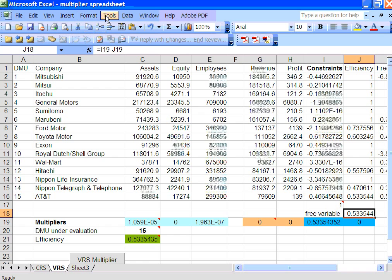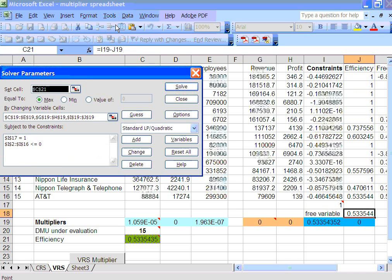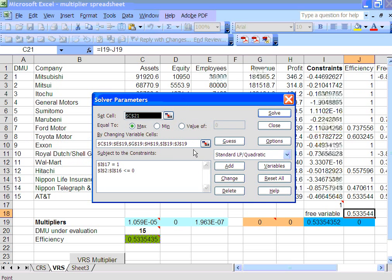So if I go into the solver here, if you can see the changing cells, this particular cell j18 is not in there. Instead, I have i19 and j19, and this is how you should model this particular variable that's free in sign in the spreadsheet.